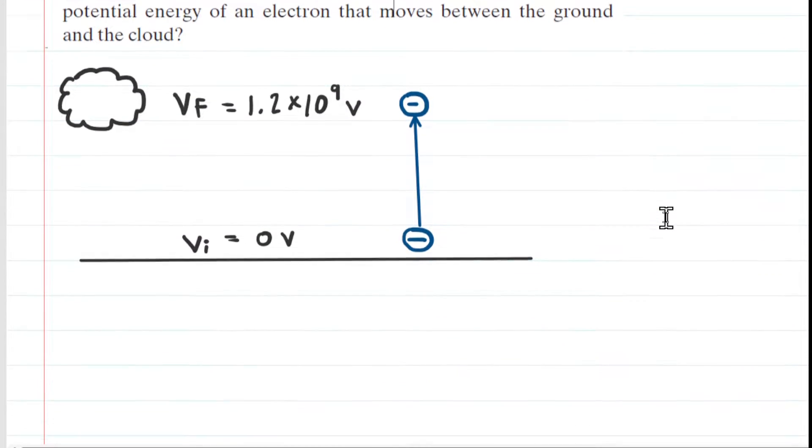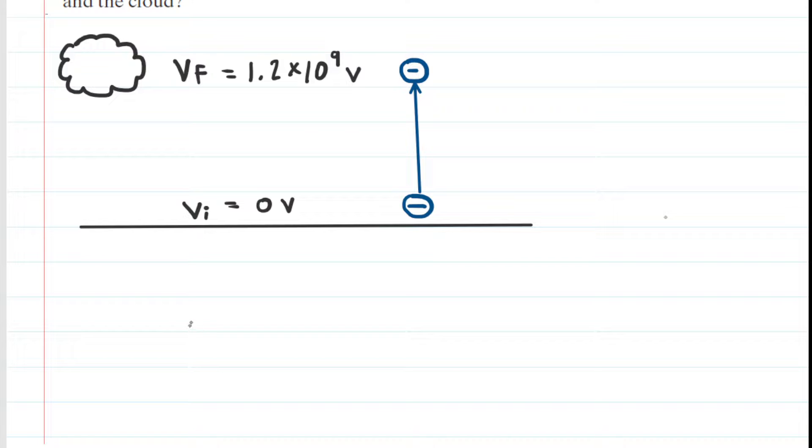To get the change in potential energy of a moving charge, that is a charge moving from a lower to a higher potential or vice versa, we can say that the change in that electric potential energy is equal to the charge multiplied by the final electric potential subtracted by the initial electric potential. In other words, the difference in the electric potential between the two points.